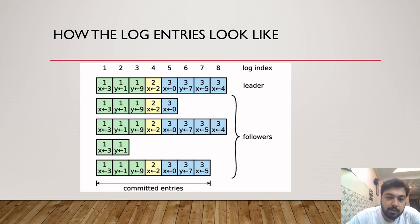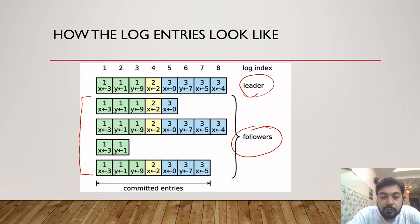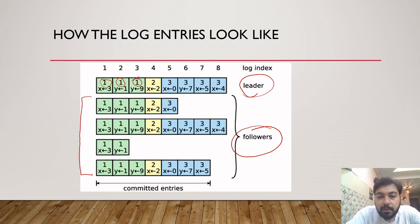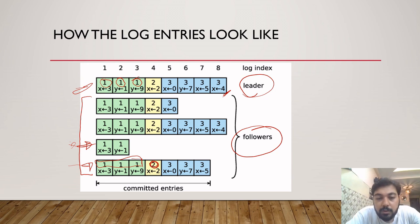Now let's look at how log entries actually look. Here is the leader's log and here are the followers' log entries — four followers and one leader. Within every log there is actually a term. So this is a first term — the leader might have changed, so some follower would have been a leader earlier. Then a new leader was elected, giving a new term. This is the third term. Each log which is created has metadata indicating which term it belongs to — term one, term two, term three, and so on.